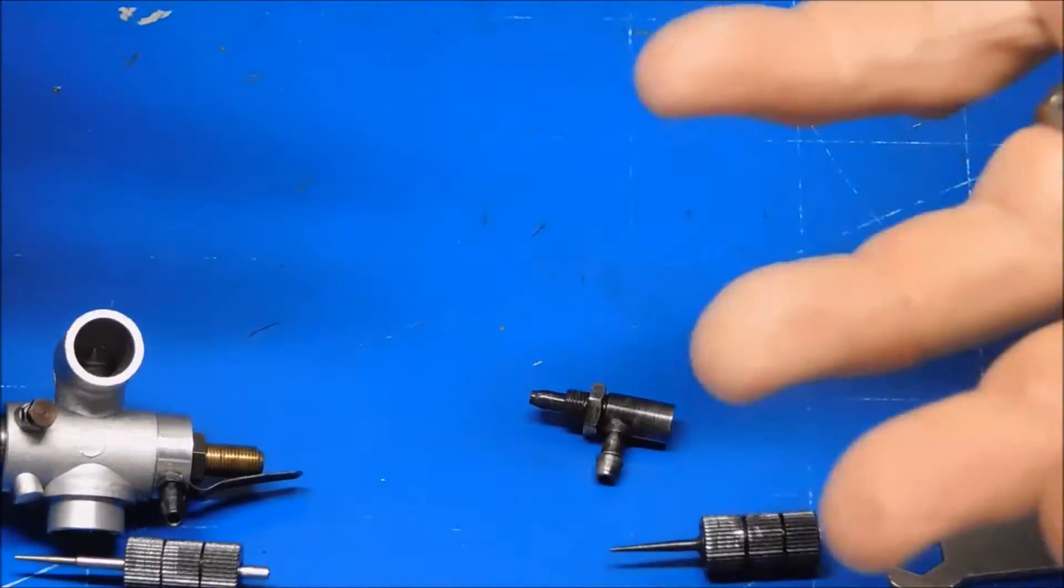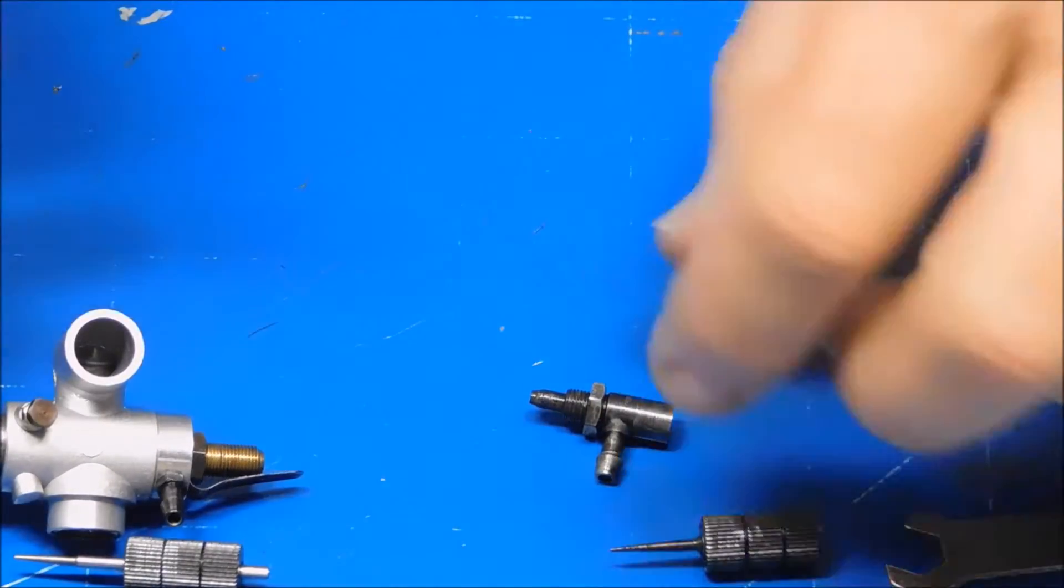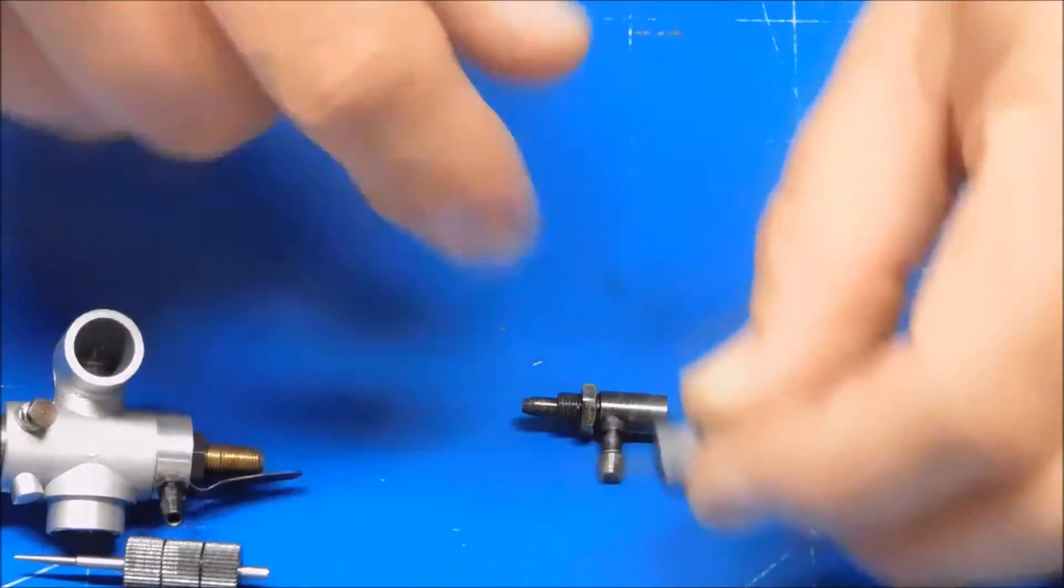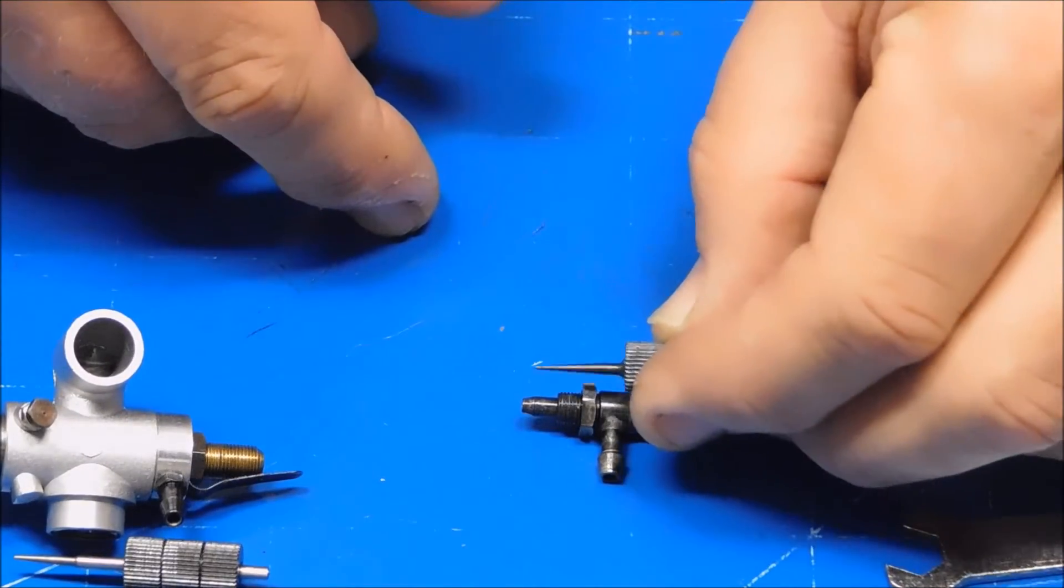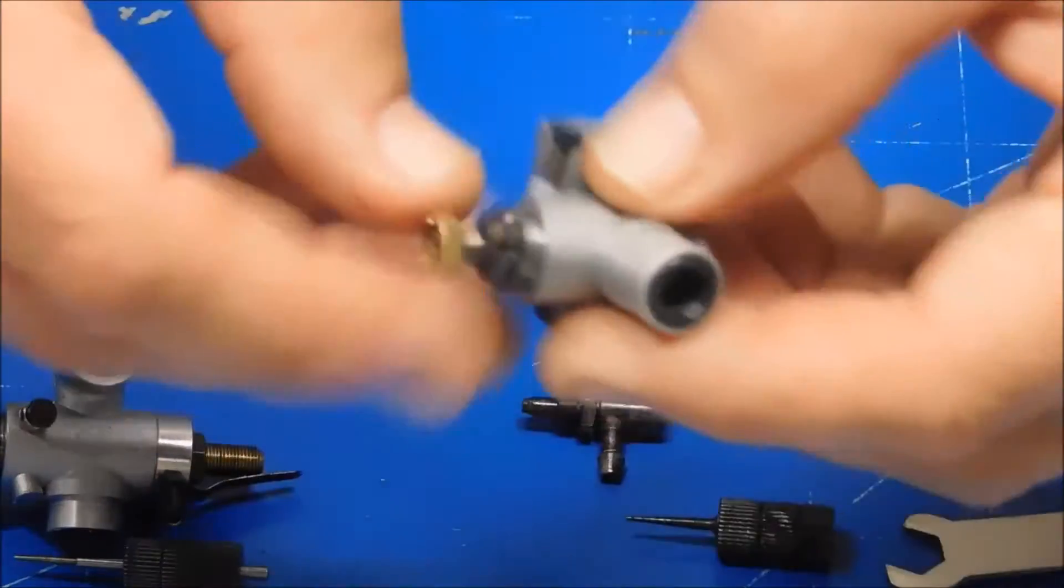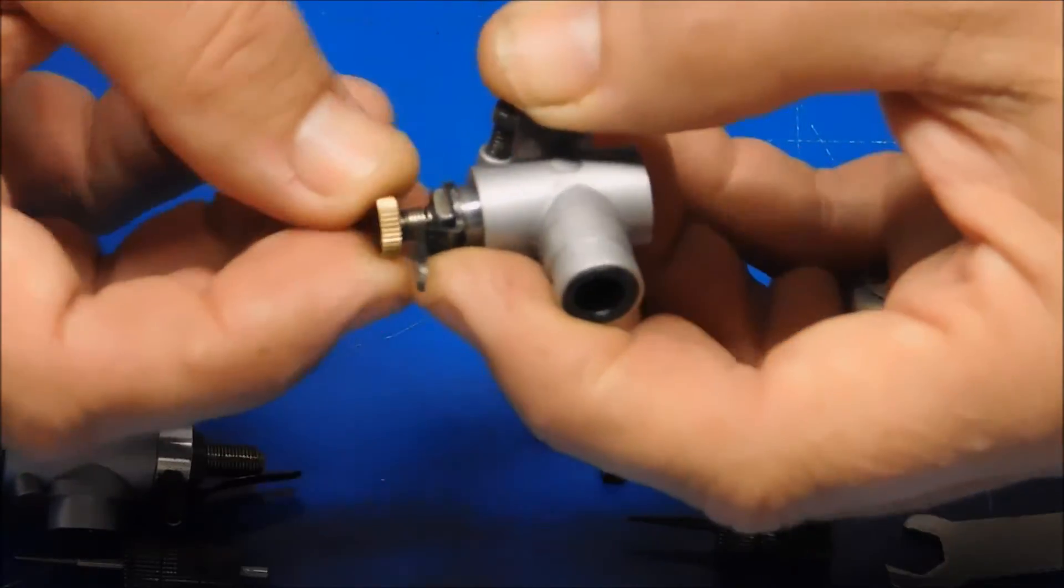You should be able to close a needle valve on an engine until it's completely lean, until it's closed and then it dies. Otherwise, this one, because of the design and maybe they didn't have the right length here or what, it never would thread in there far enough to actually close that enough. So what I ended up having to do was try and then tune it with this knob, which is the low speed knob.